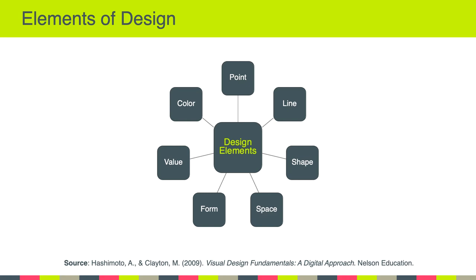Before we get into all of that I do want to talk a little bit about the five lines assignment. One of the things we haven't really talked about this semester is this idea that there are elements of design. Now depending on which source you cite there are anywhere from six, seven, sometimes eight different elements of design. As you can see here I have one example where there's point, line, shape, space, form, value, and color. The idea behind the elements of design is that these can be used together or separately to create all kinds of visual representations.